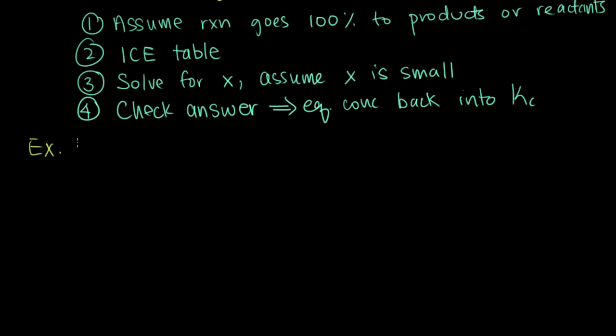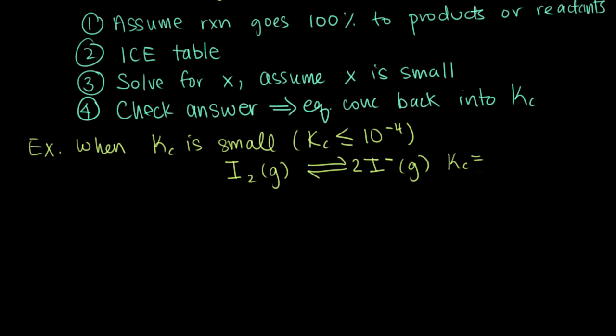We're going to go through an example of when we have a really small equilibrium constant. That means kc is less than or equal to 10 to the minus 4. Since our equilibrium constant is really small, we have mostly reactants and not very much product when we reach equilibrium. The example reaction is iodine gas, I2, in equilibrium with 2I minus, also gas. The k value for this reaction at the temperature we're interested in is 5.6 times 10 to the minus 12. That's a pretty small number, definitely smaller than 10 to the minus 4, so we should be able to use the small x approximation.